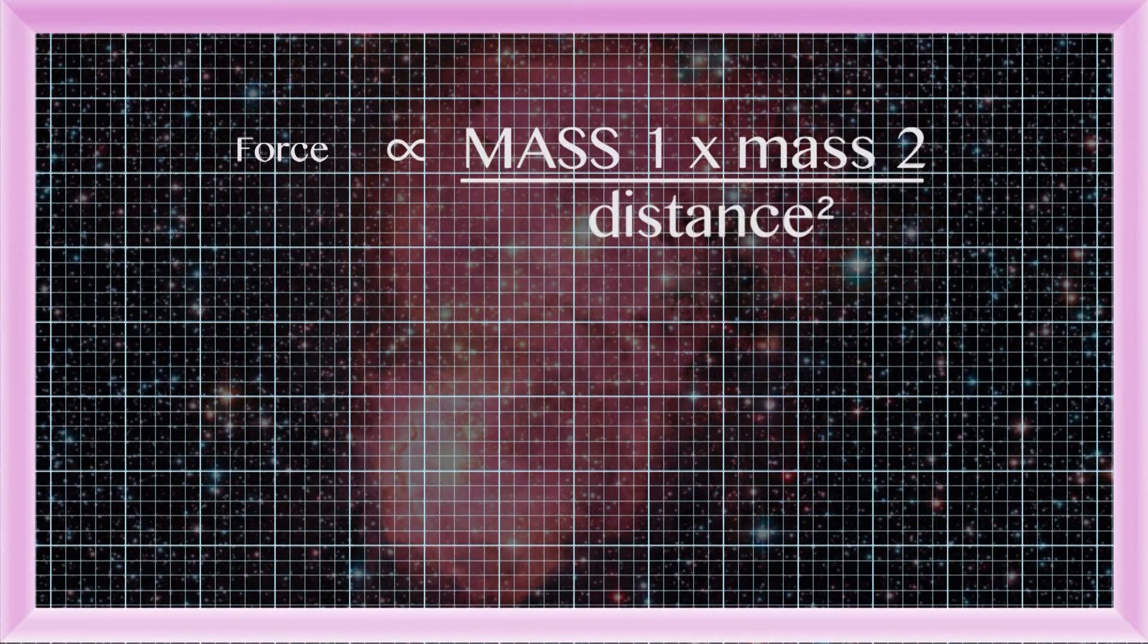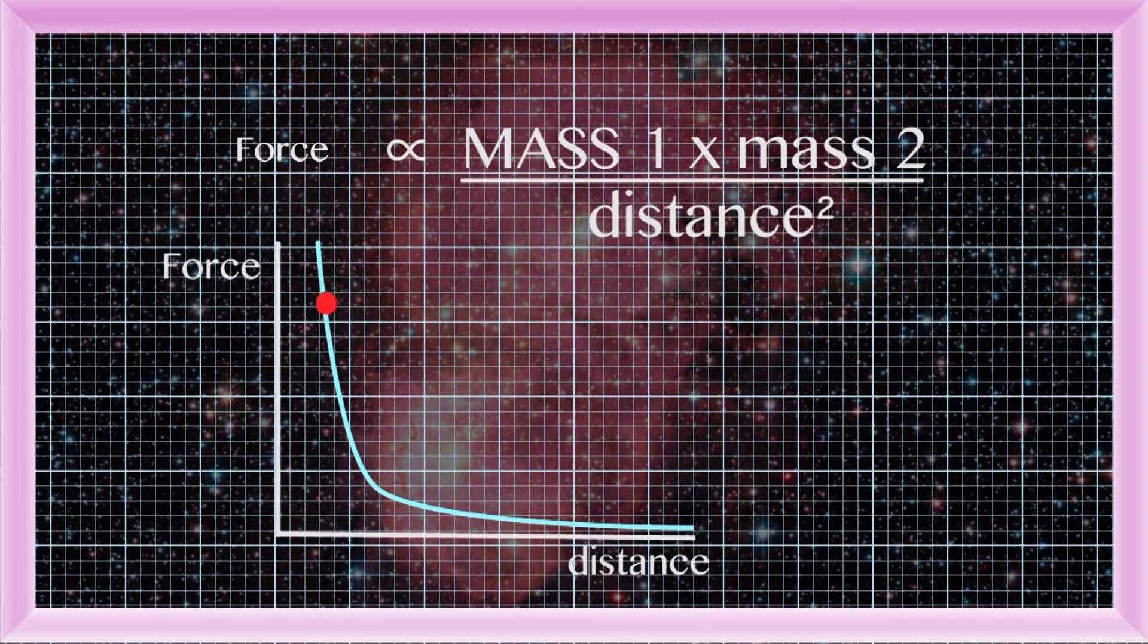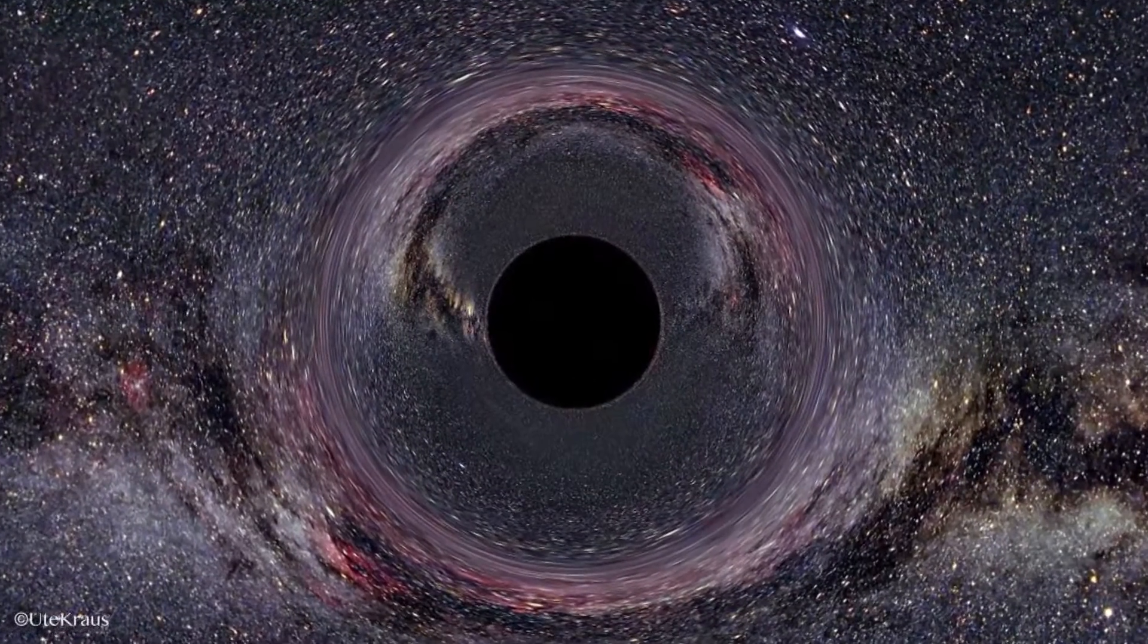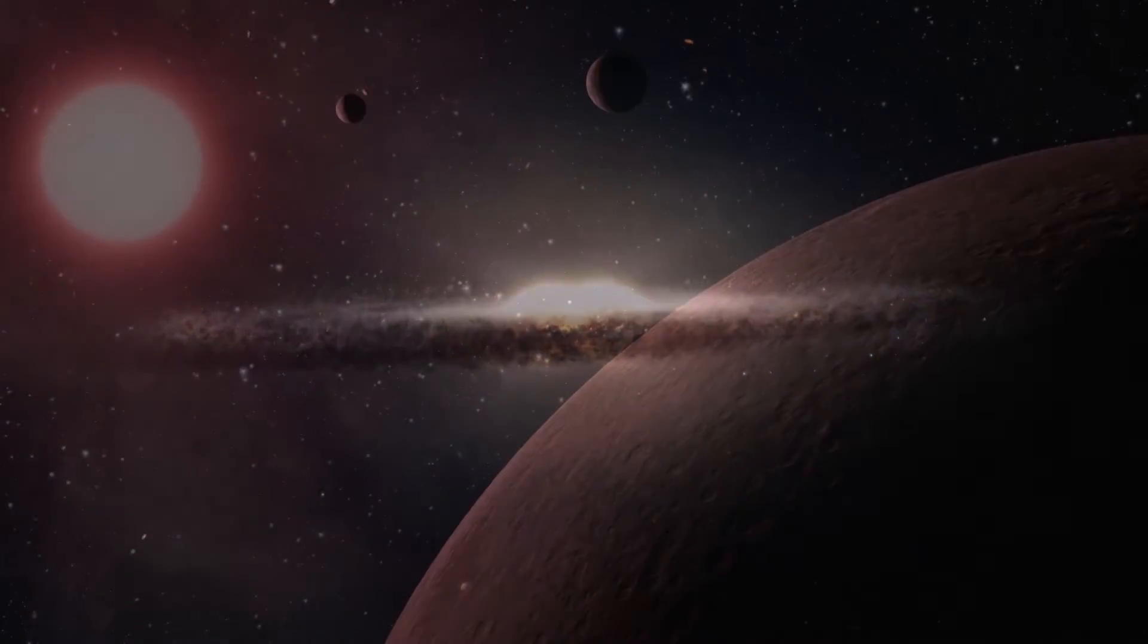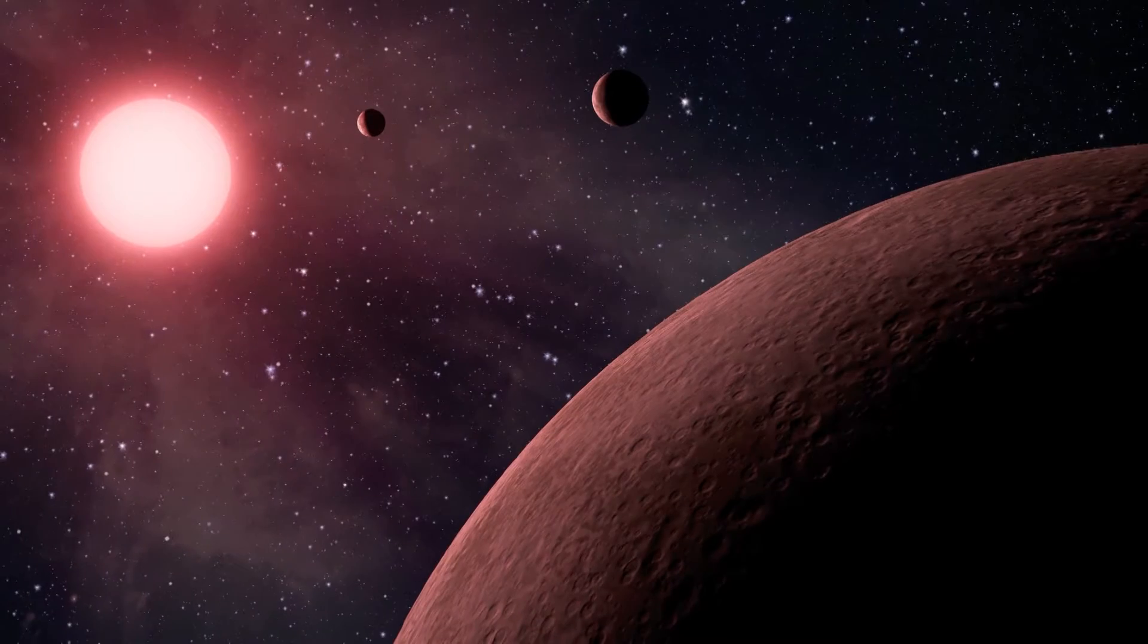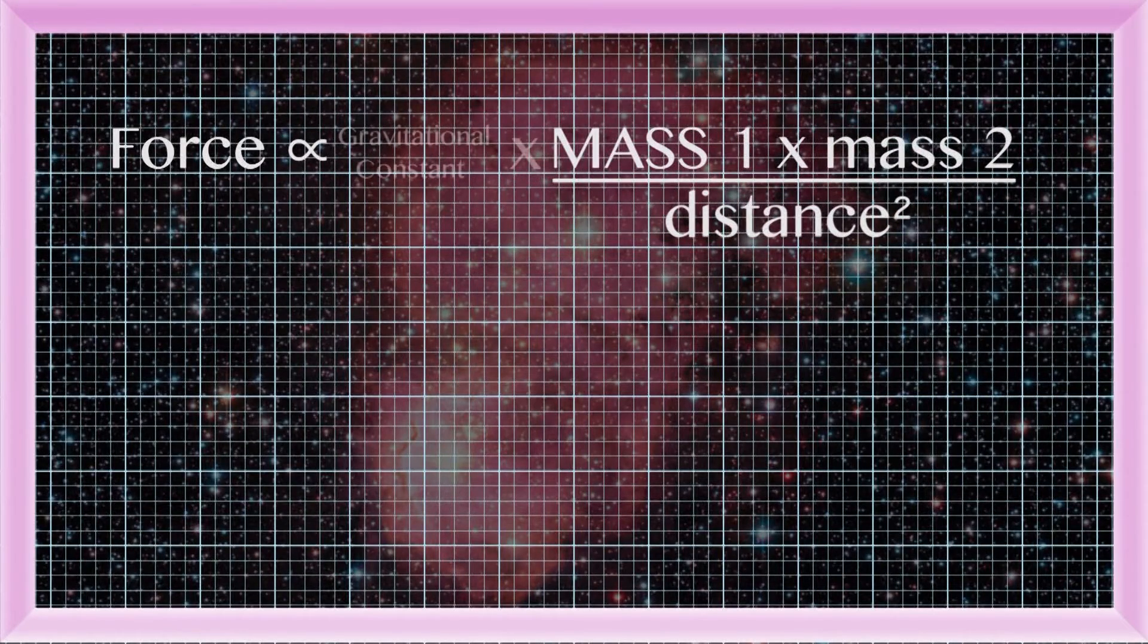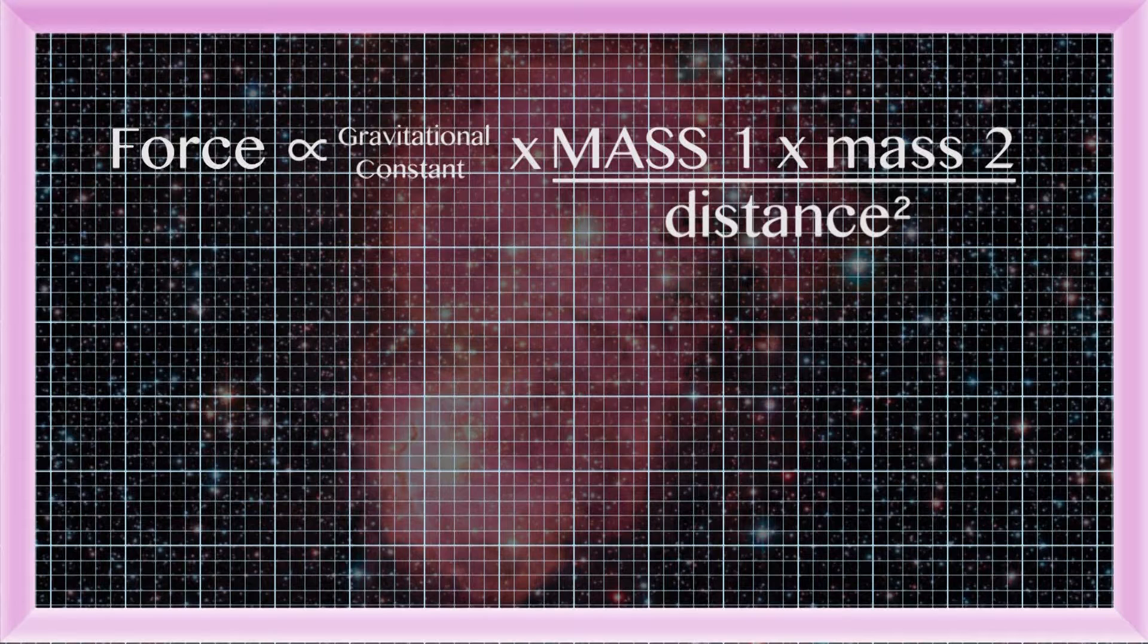But here's the cool thing about this equation. Whatever distance you put two objects apart, the force gets weaker and weaker, but never reaches zero. This means that right now, your body is being gravitationally attracted to the supermassive black hole at the centre of the Milky Way. To complete the equation, we need to include a constant, the aptly named gravitational constant. This is a number that makes everything work exactly.